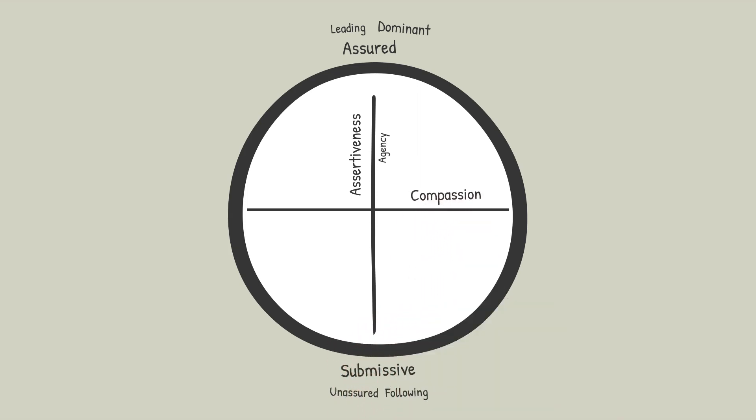The horizontal axis is compassion. At a high level of compassion, you're very caring toward other people, and at a low level of compassion, you're not paying attention to other people. To simplify this diagram, let's use a single word for these four points: warm, cold, assured, and submissive.